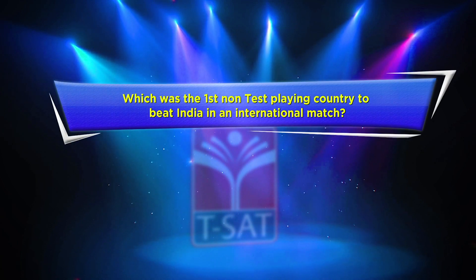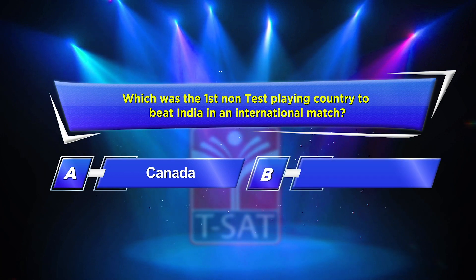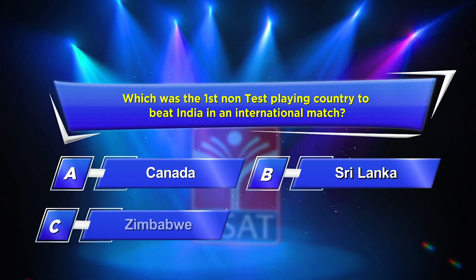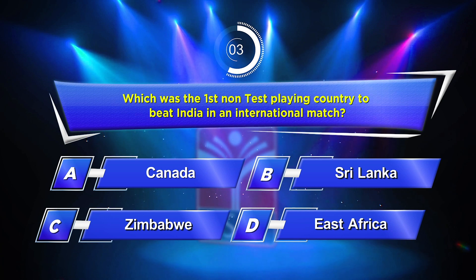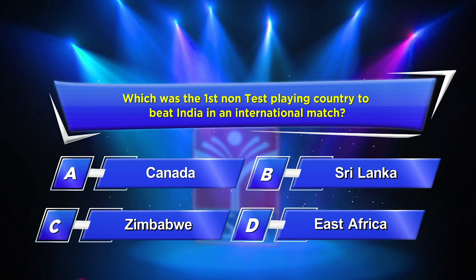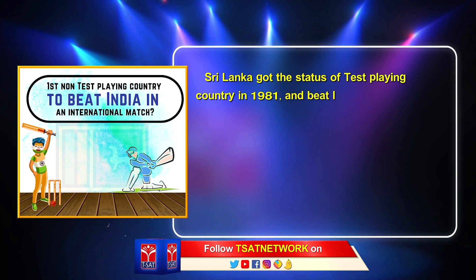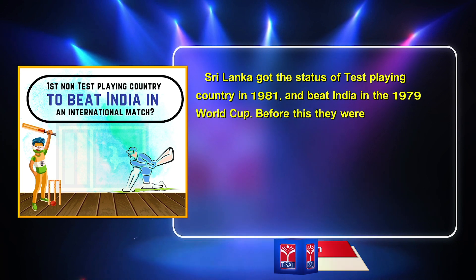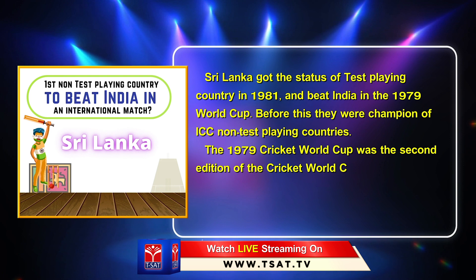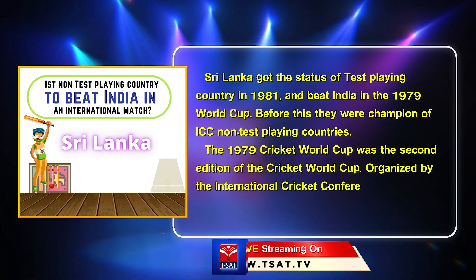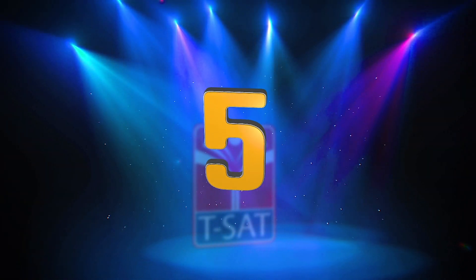The fourth question is about sports. Which was the first non-test playing country to beat India in an international match? Option A: Canada. Option B: Sri Lanka. Option C: Zimbabwe. Option D: East Africa. Your time starts now. The correct answer is Option B. Sri Lanka got the status of test-playing country in 1981 and beat India in the 1979 World Cup. Before this they were champions of ICC non-test playing countries. The 1979 Cricket World Cup was the second edition of the Cricket World Cup organized by the International Cricket Conference, held in England from 9th to 23rd June 1979.